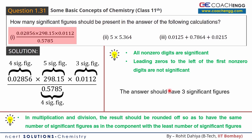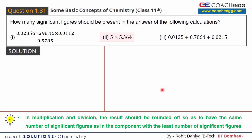Now I will move on to the second part. In the second part, we have the number 5 multiplied by 5.364. The multiplication rule is used here: the answer should have the same number of significant figures as the quantity with the fewest significant figures.